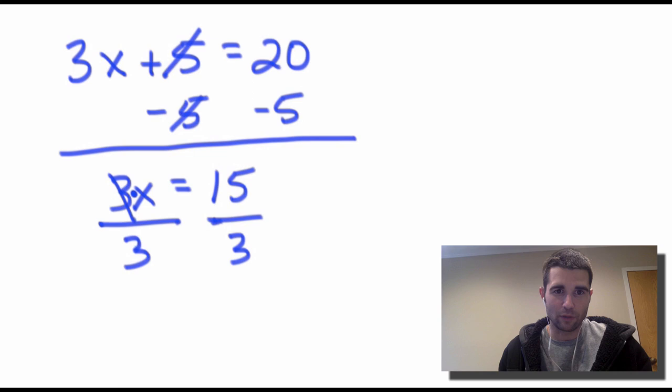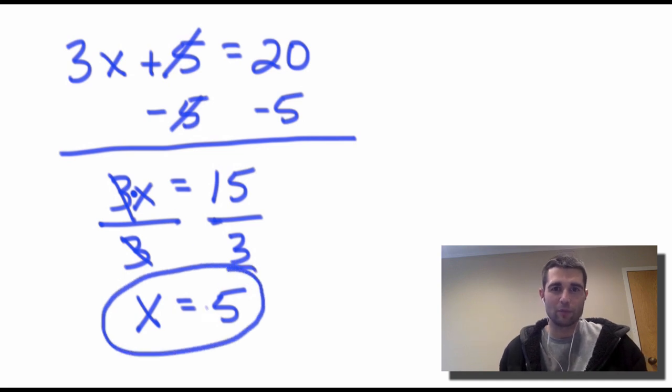On the left, the 3s will cancel. We'll just be left with the x, and 15 divided by 3 will give us 5. So that's a pretty easy two-step equation. Let's take a look at another one.